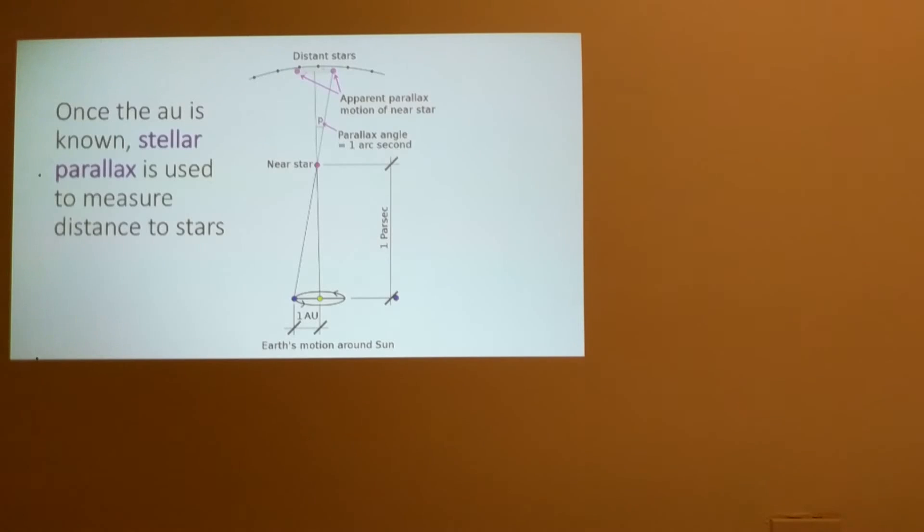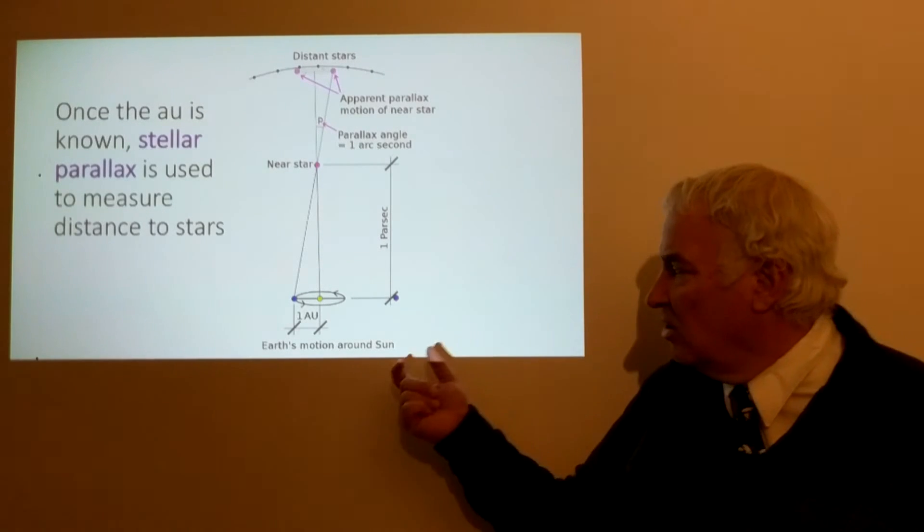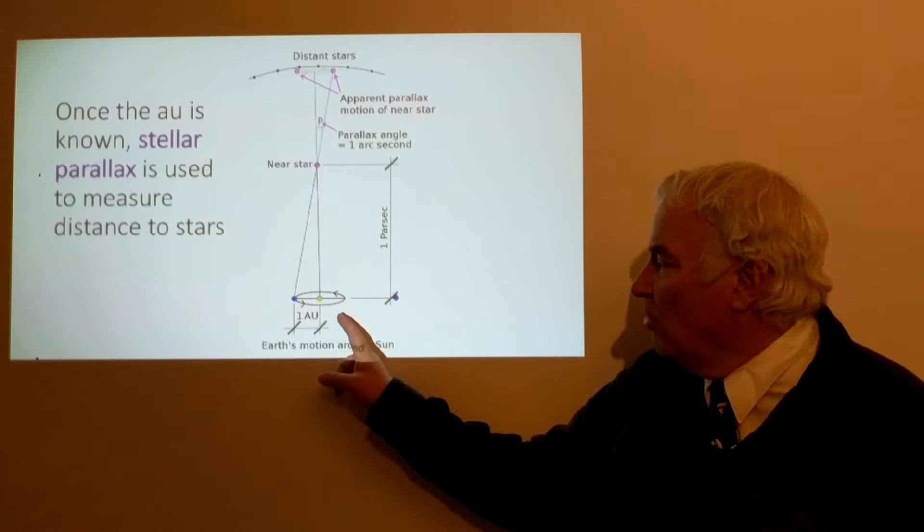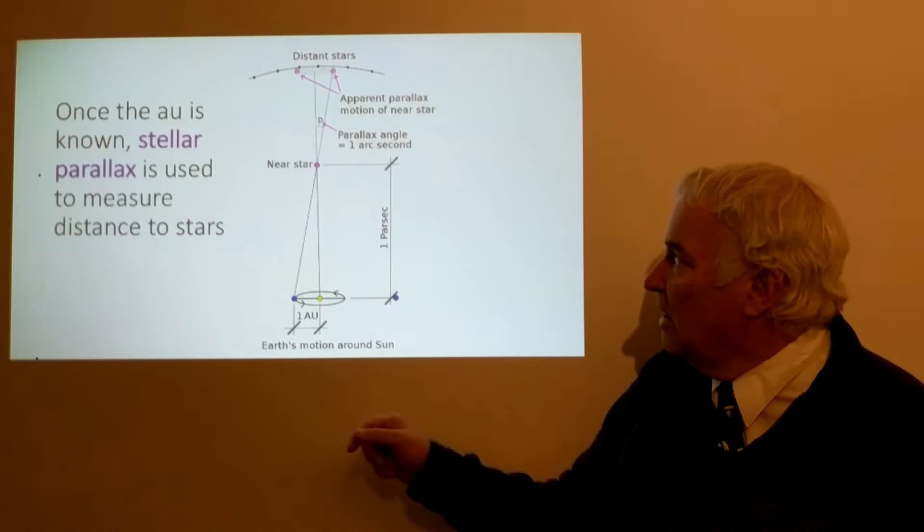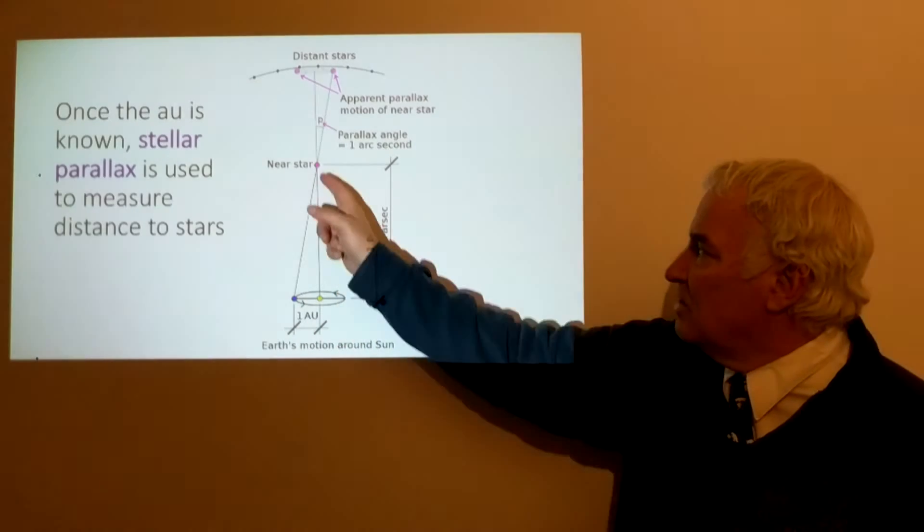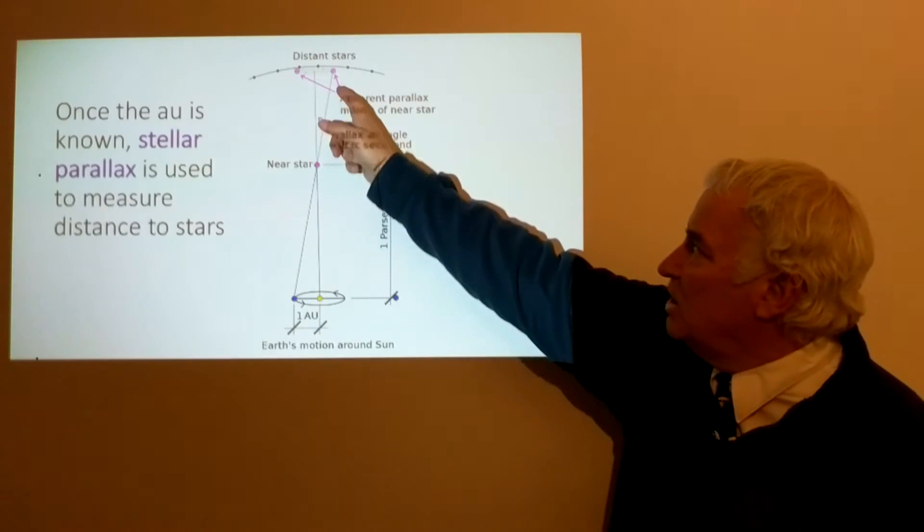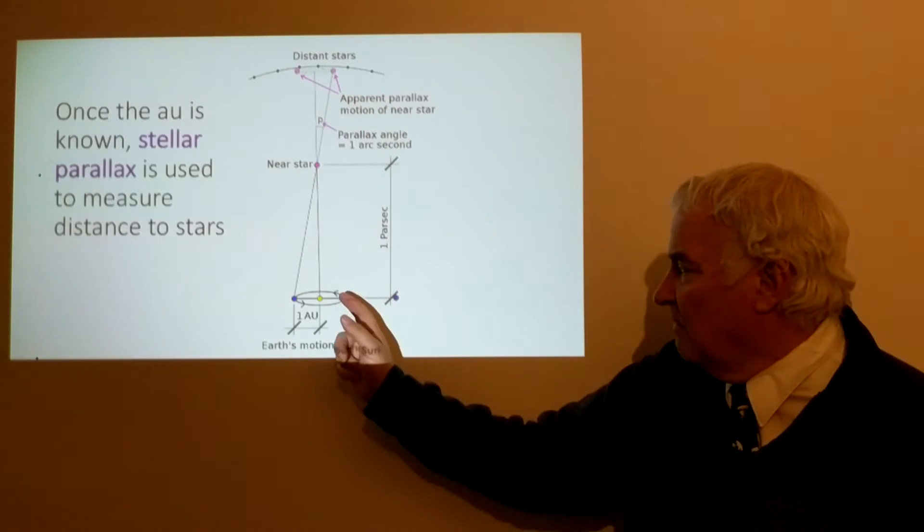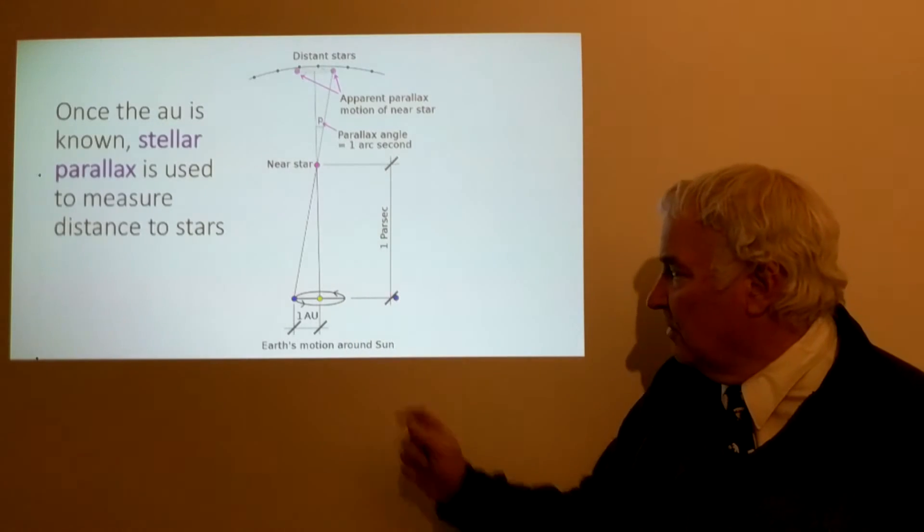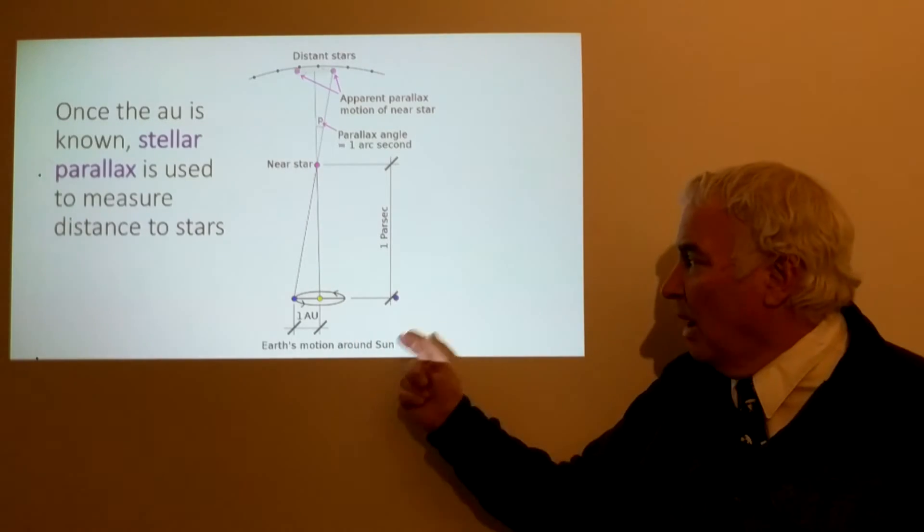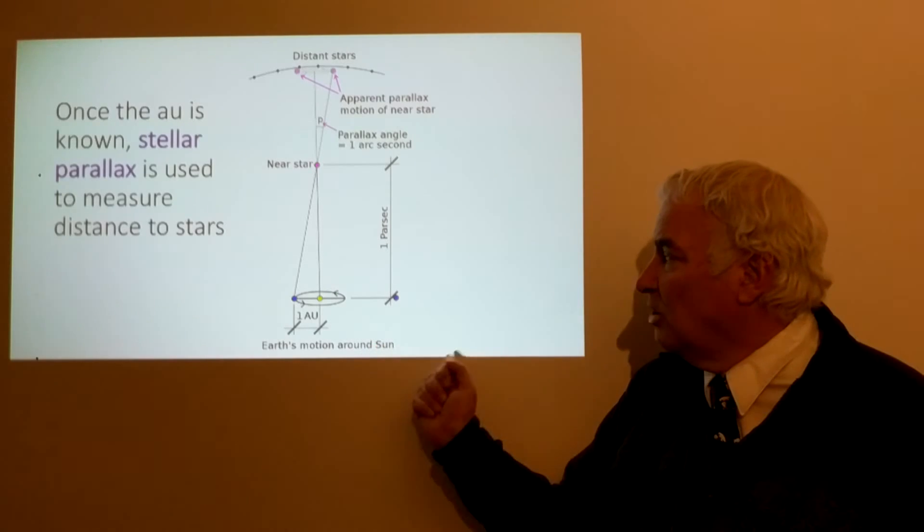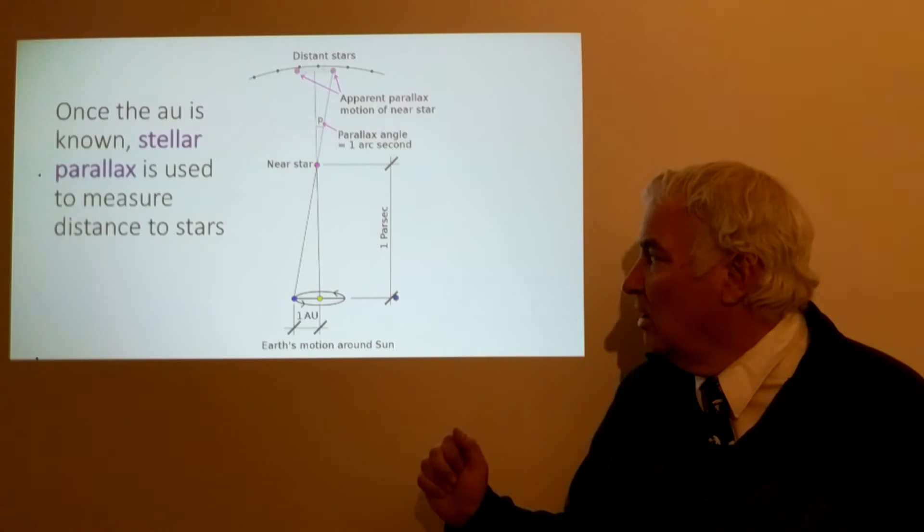Now once the astronomical unit is known, this is very important. Knowing the astronomical unit is critical in the cosmic distance scale, it's a fundamental piece. Once we know that we can use the orbit of the earth, this is stellar parallax. Six months apart the earth is in two different positions and the nearby star can be seen to shift compared to far away stars. The further away it is the smaller it will shift, the closer by the larger. So by measuring how much that shift takes place the distance to the star can be determined, and this is the only direct way to measure distances to stars, things out beyond our own solar system.